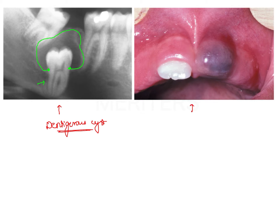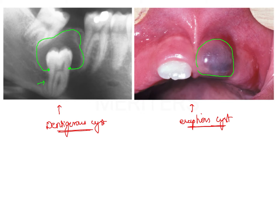The second picture shows an eruption cyst — the development of a cyst around an unerupted tooth within the soft tissue level. In this picture, the cystic lesion is evident in the region of an unerupted central incisor, with a bluish tinge on the surface. Importantly, it is located within the soft tissue, whereas the dentigerous cyst is within the bone.